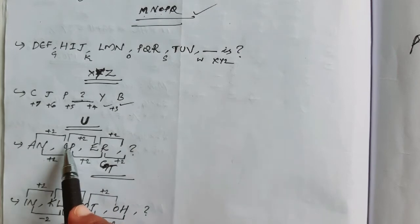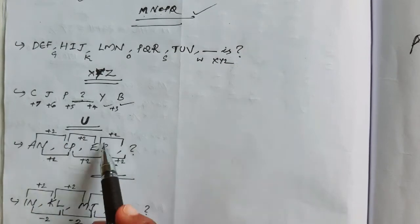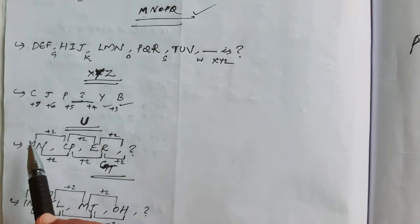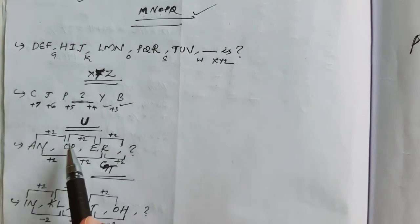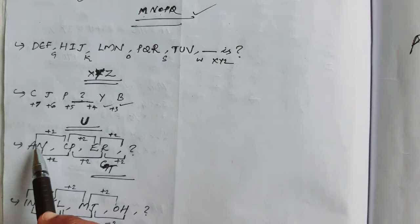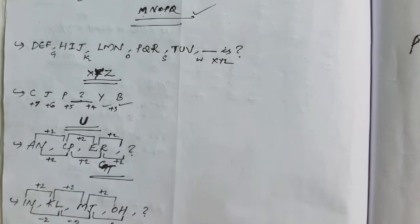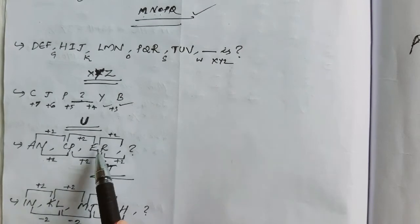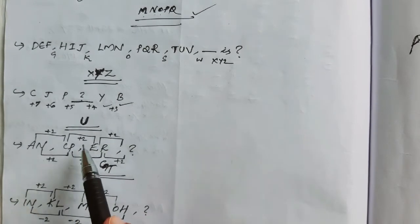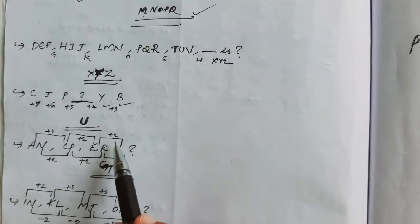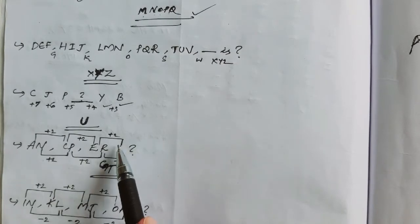For the second term, A to C is C, and C plus 2 equals E. So here it is plus 2, and again it is plus 2. The next term follows: E plus 2 equals G.